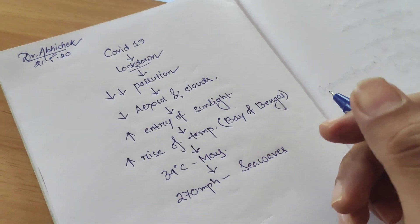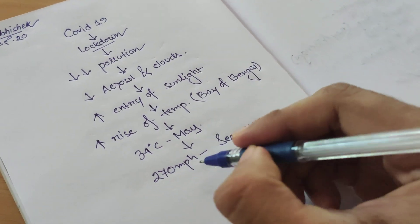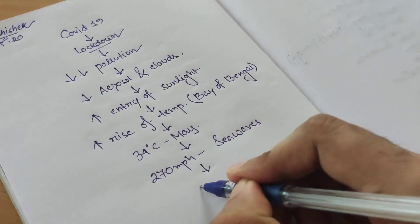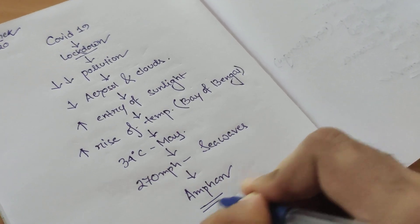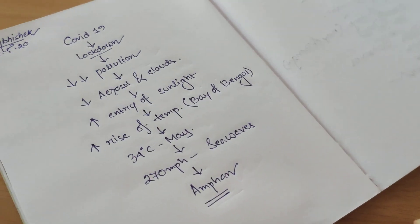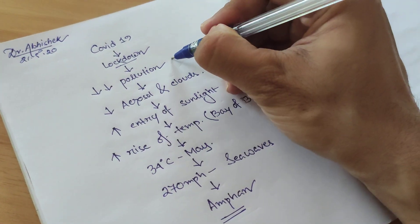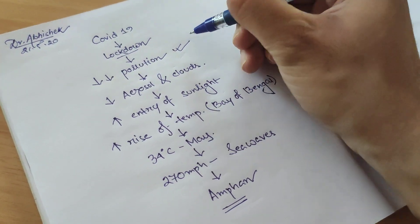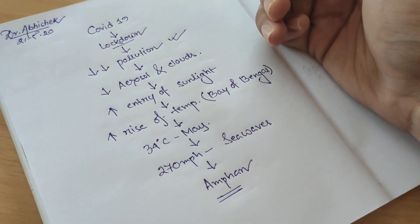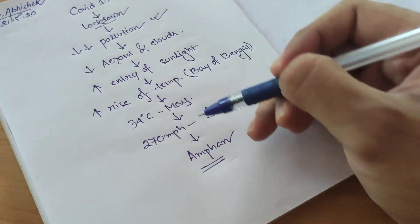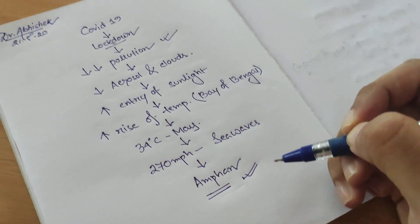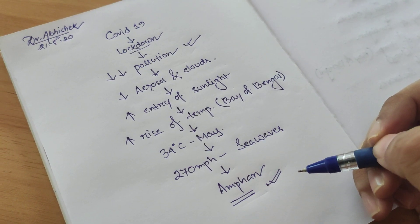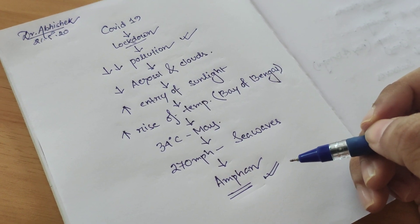This tropical cyclone, Amphan, is a paradox where you can see that in spite of decreasing pollution, which is a blessing from COVID-19, we are getting nature's way of responding to it as Amphan. Such a paradox. Let us all pray for Bengal, Bangladesh, and Orissa.